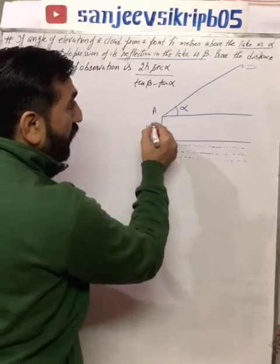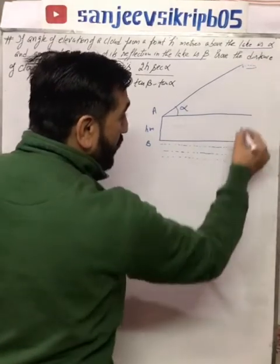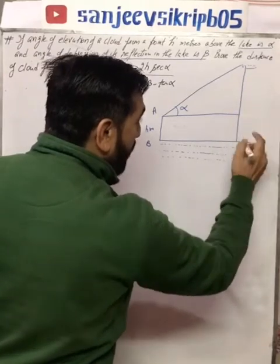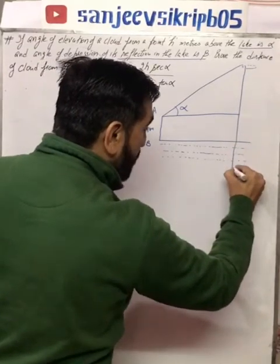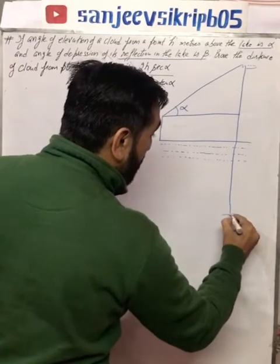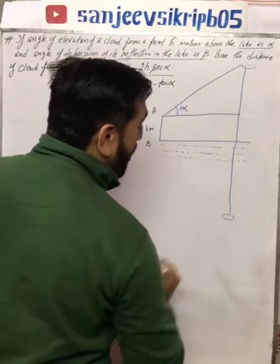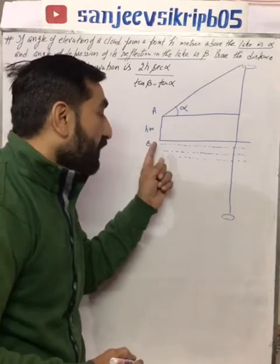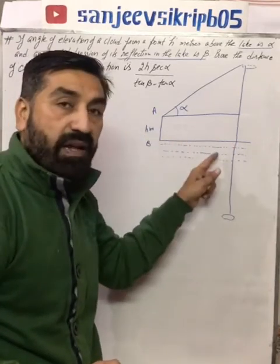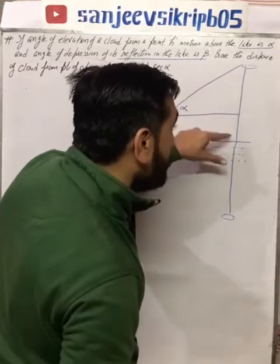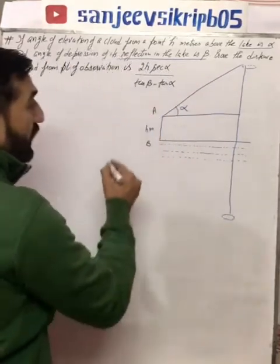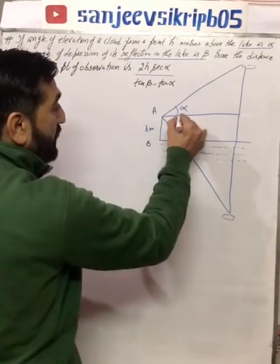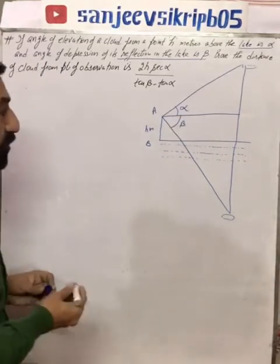The angle of depression of the cloud's reflection — because the lake is acting as a mirror. The distance of the image from the mirror is the same as the distance of the object from the mirror. So the surface of the lake works as a mirror. The angle of depression of the reflection is beta. I hope the statement is clear to you.